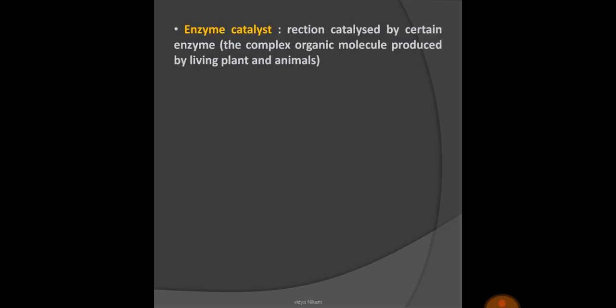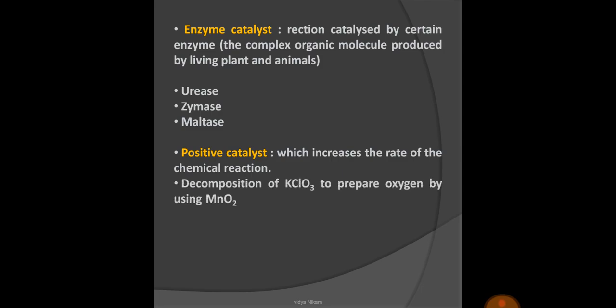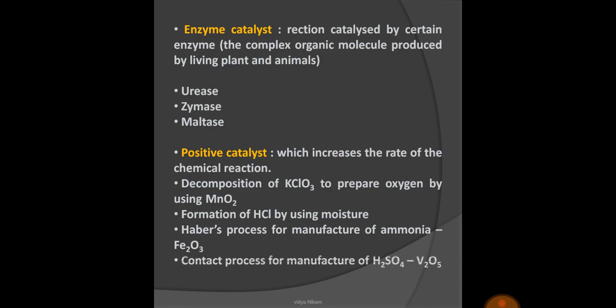Next is enzyme catalyzed reactions. These are the reactions which are catalyzed by certain enzymes, and enzymes are complex organic molecules produced by living plants and animals. For example, urease enzyme is used. Next, positive catalyst - it is the one which increases the rate of chemical reaction. For example, decomposition of KClO3 to prepare oxygen by using MnO2 as a positive catalyst, formation of HCl by using moisture, Haber's process for manufacture of ammonia where Fe2O3 acts as a positive catalyst, contact process for manufacture of sulfuric acid where vanadium pentoxide acts as a positive catalyst.